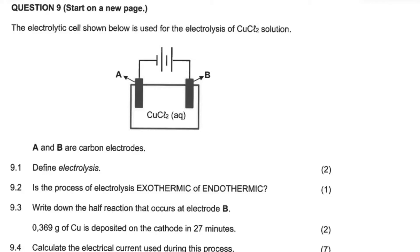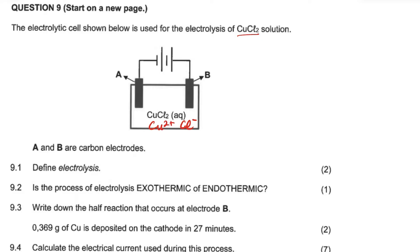Let's look at question nine. The electrolytic cell shown below is used for electrolysis of copper chloride, which means the decomposition of copper chloride. We're decomposing it — splitting the Cu²⁺ and Cl⁻ by electricity using the battery or power source shown.